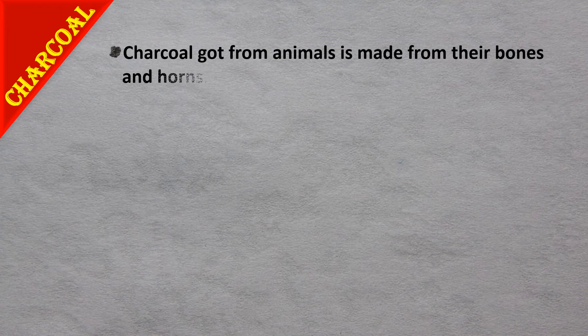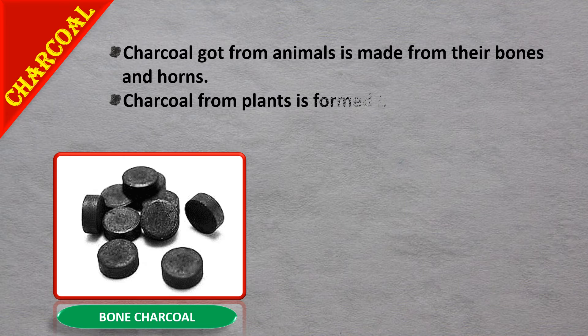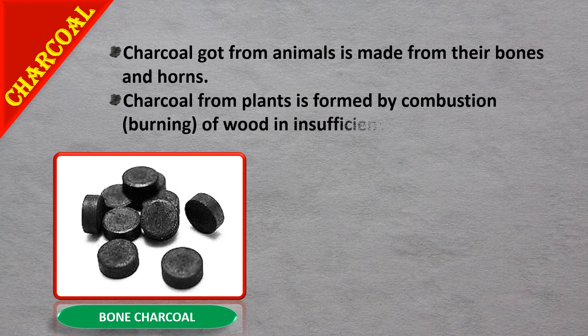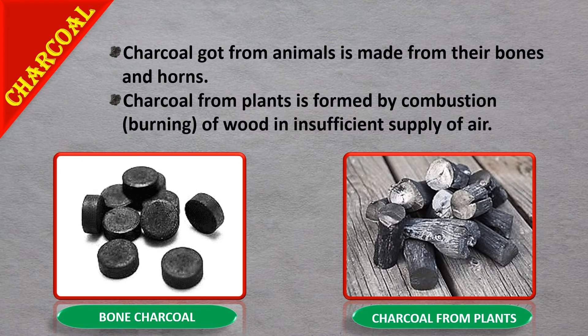The next amorphous form is charcoal. Charcoal obtained from animals is made from their bones and horns, whereas charcoal obtained from plants is formed by combustion — burning wood in an insufficient supply of air. So there are two types of charcoal: one from animals and one from plants.